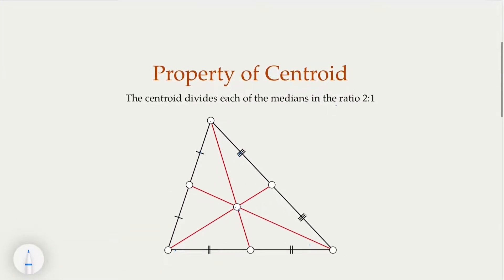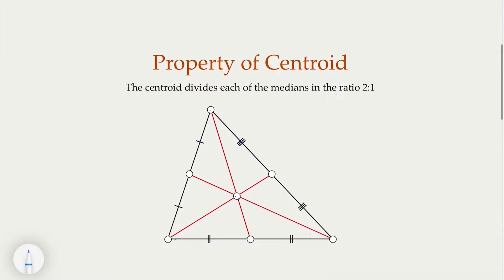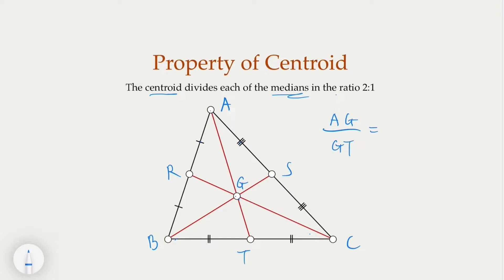We would like to review the property of the centroid. One basic property we're going to use today is that the centroid point G divides each median in the ratio of 2 to 1. So in other words, with points A, B, C, R, S, T, we claim that AG over GT is going to be 2 over 1. How do we prove that?